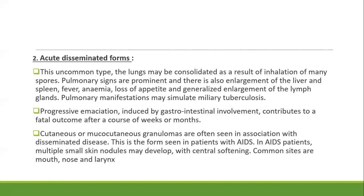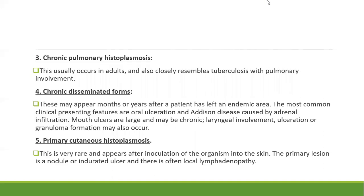Cutaneous or mucocutaneous granulomas are often seen in association with disseminated disease — this is the form seen in patients with AIDS presenting with multiple skin nodules that may develop central softening. Common sites are mouth, nose, and larynx. Chronic pulmonary histoplasmosis usually occurs in adults and closely resembles chronic pulmonary tuberculosis. The chronic disseminated form may appear months or years after the patient has left an endemic area, with the most common presenting features being oral ulcers and Addison's disease caused by adrenal infiltration.